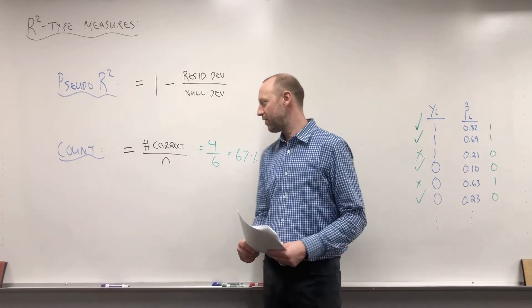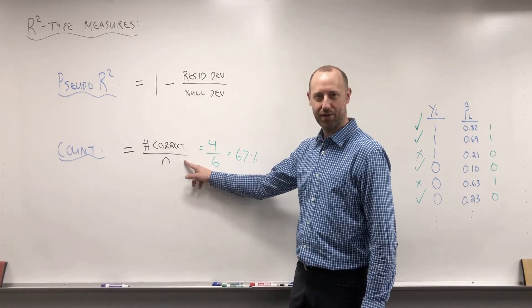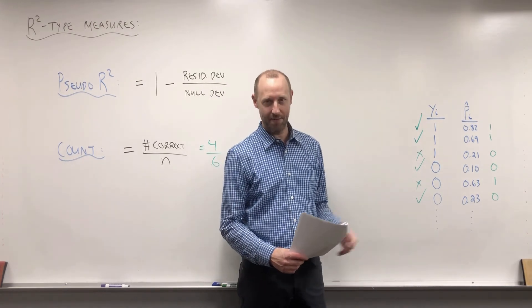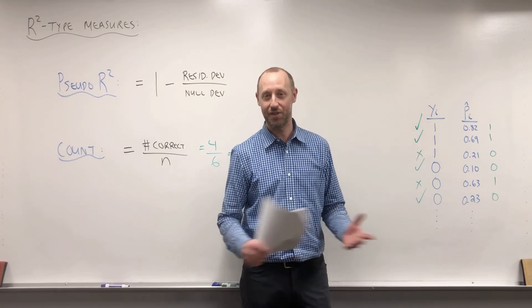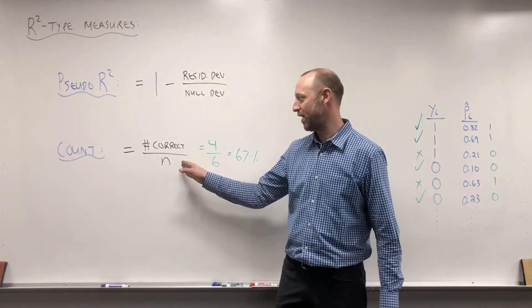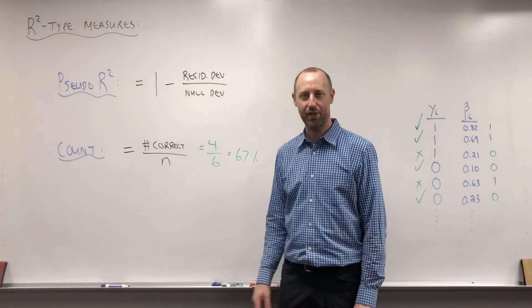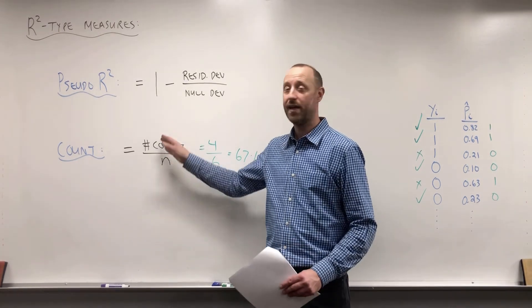So in this quick made-up example we got it right four out of six times, or 67% — that's what the Count R-squared is. There's also a bias-adjusted Count R-squared, which essentially tries to adjust for how often you'd get it correct just by randomly guessing — for instance, if you guess the outcome happens for everyone, you'd get it right for every case where it actually happened. It tries to correct for how often you'd get it right by chance. These are the ideas behind some of the R-squared type measures — stay safe, everyone.